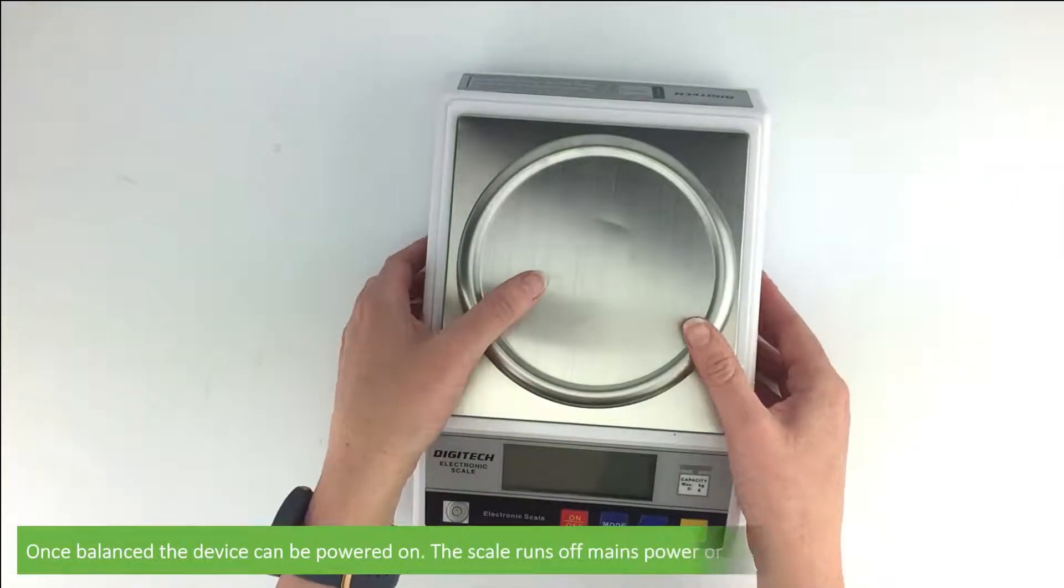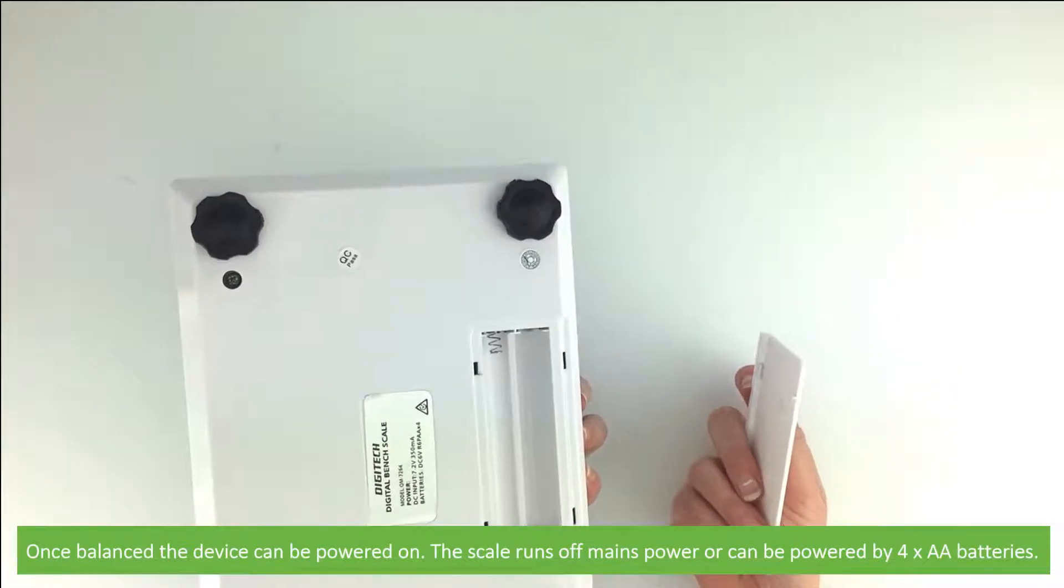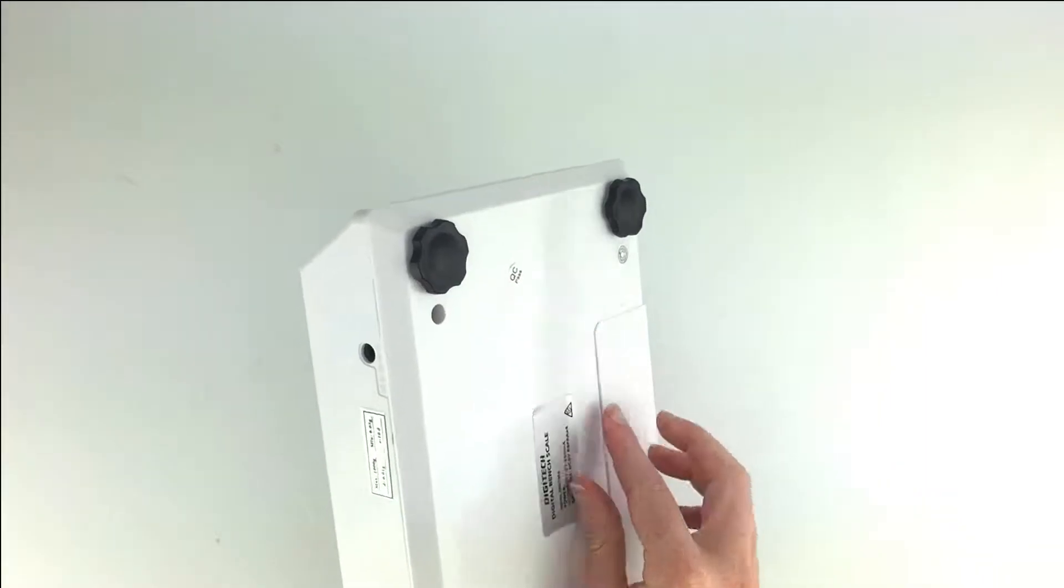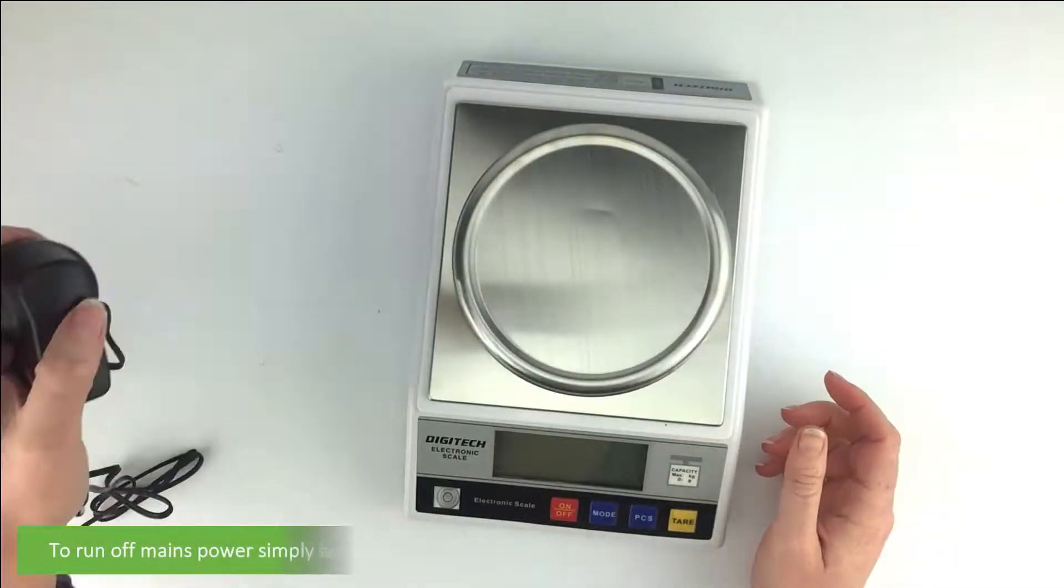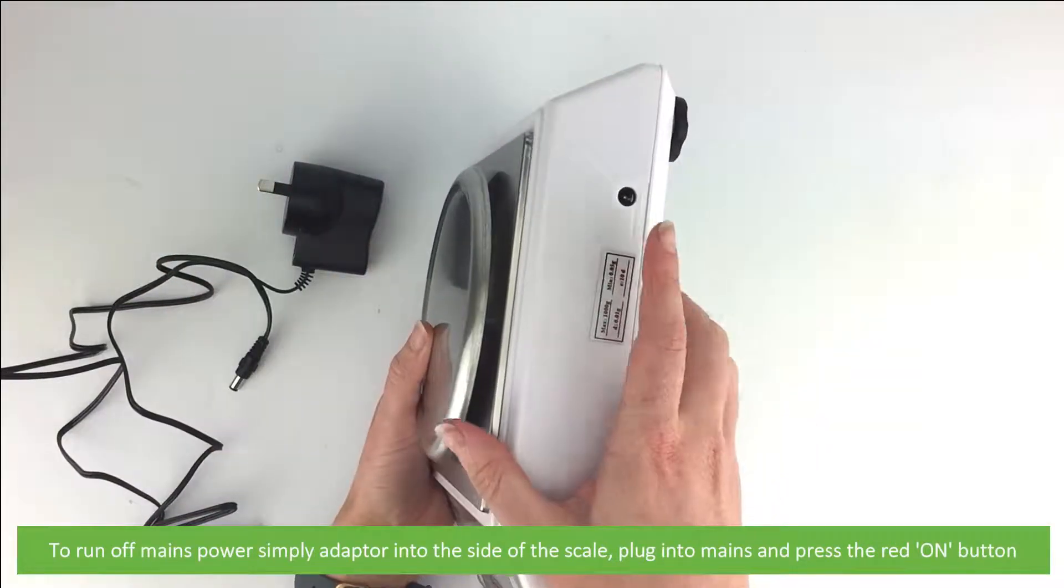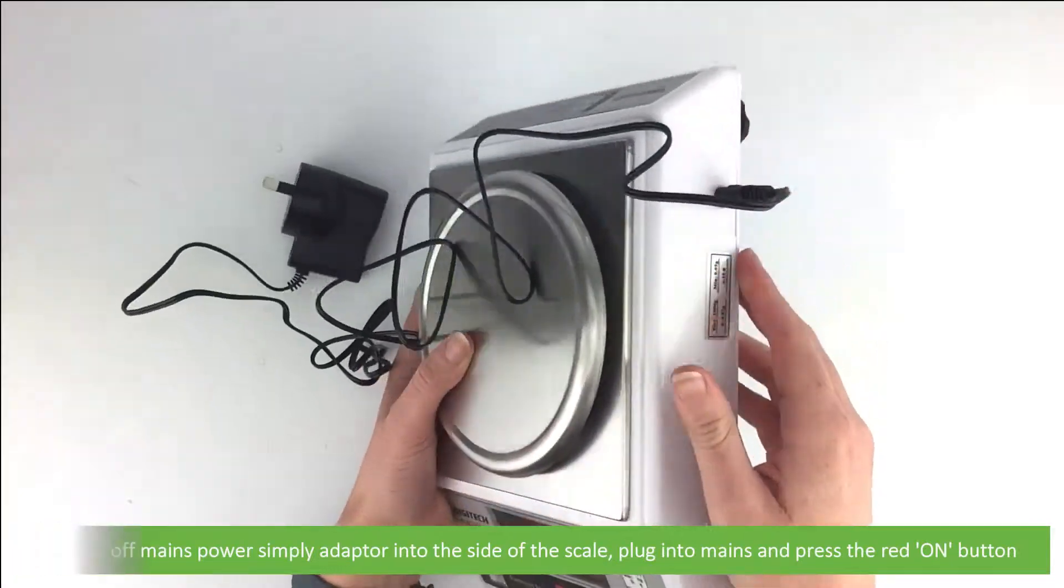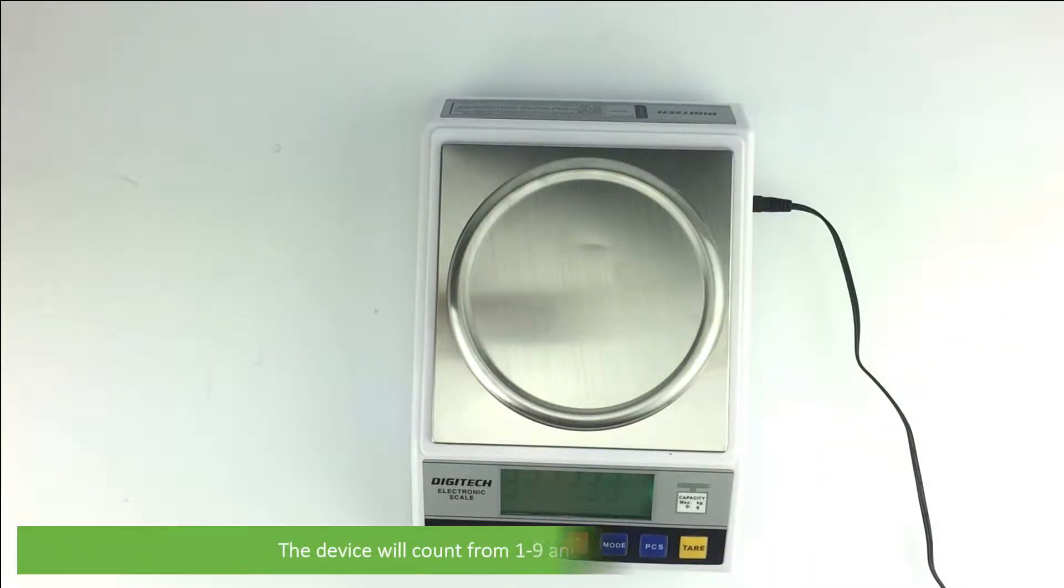Once balanced, the device can be powered on. The scale runs off mains power or can be powered by four double-A batteries. To run off mains, simply plug the adapter into the side of the scale and press the red on button. The device will count from one to nine, and then it's ready for use.